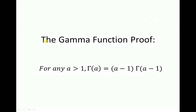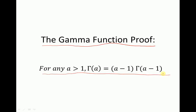In this video I will look at the gamma function, and I will prove that if the parameter alpha is greater than 1, then the gamma function of alpha equals alpha minus 1 times the gamma function of alpha minus 1, and therefore this could be further expanded to a factorial. I will just show the proof.